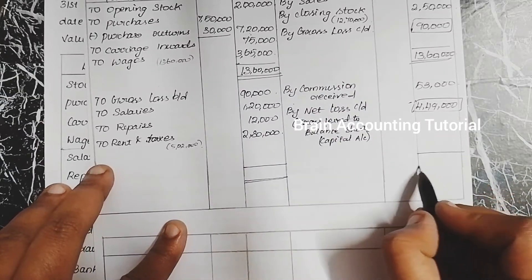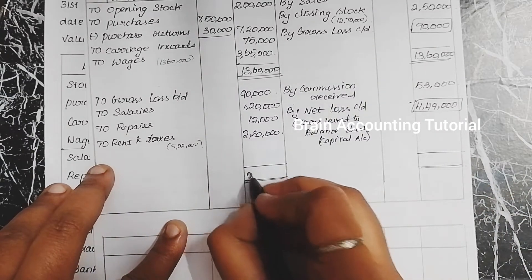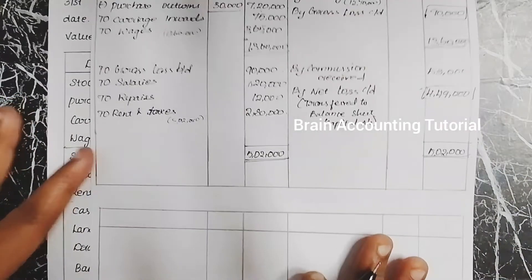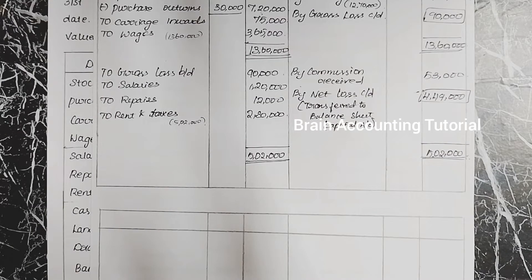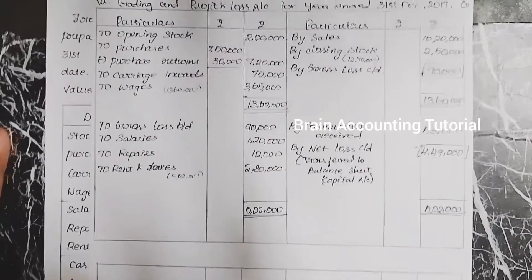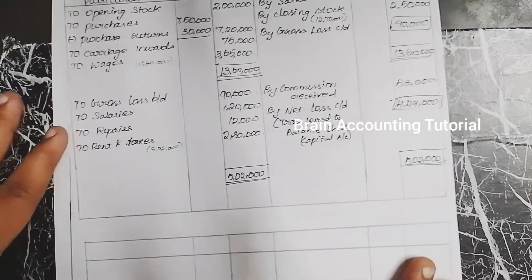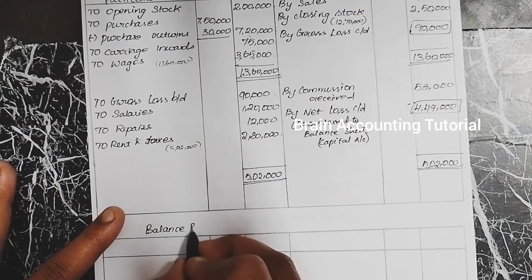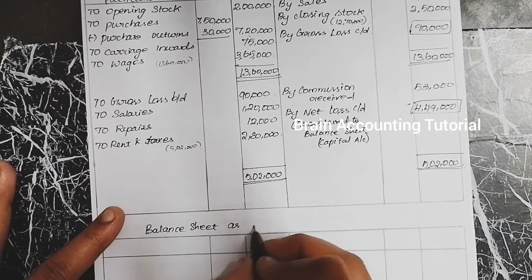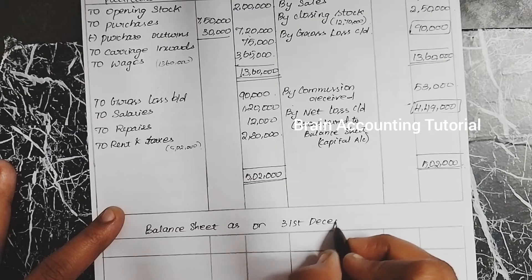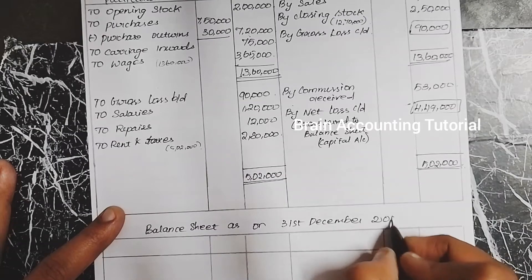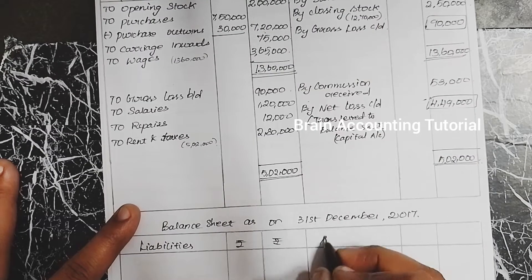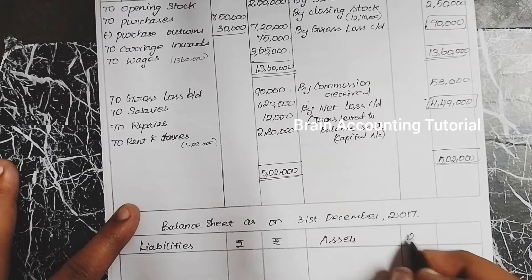Coming to our important topic — we have to prepare the Balance Sheet as on 31st December 2017. It has two sides: Liabilities with amounts on the left, and Assets with amounts on the right.